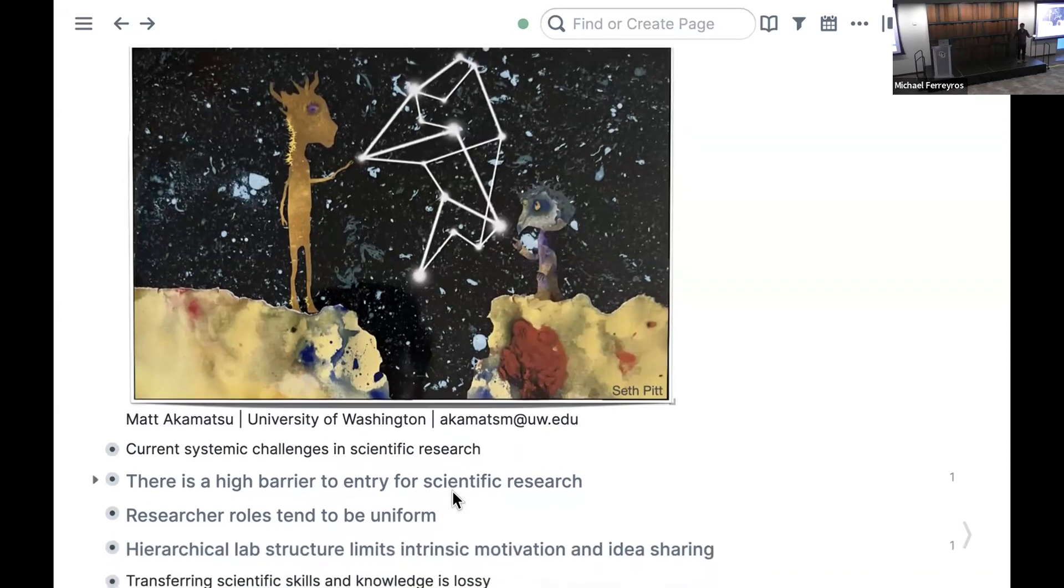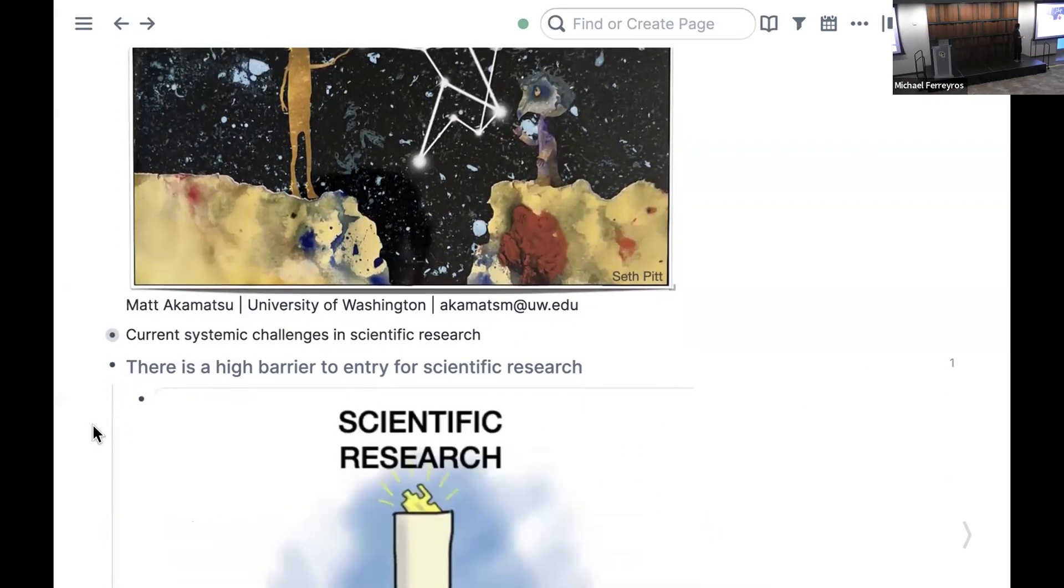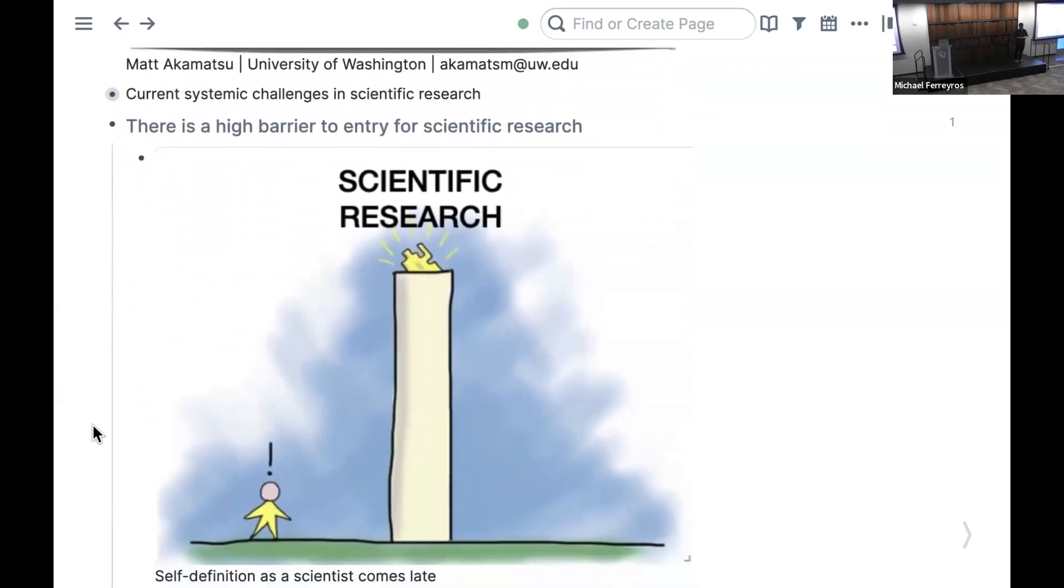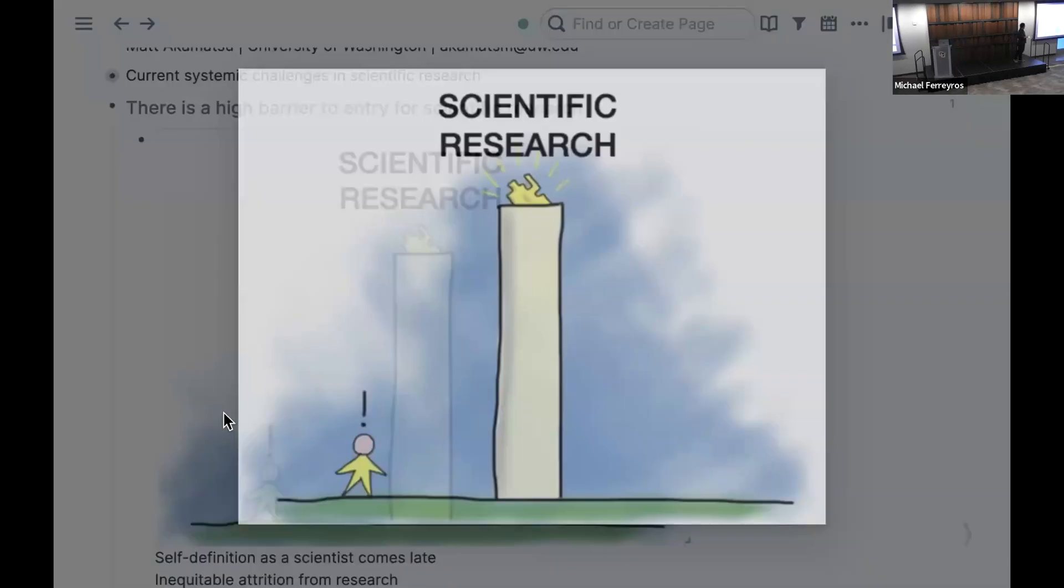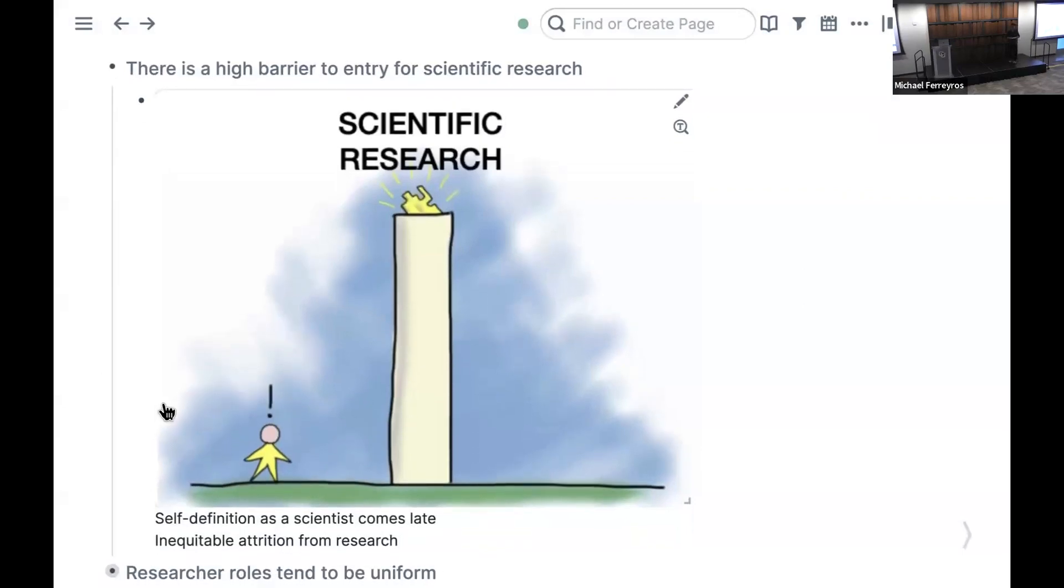I'd like to be one of the Trojan horses mentioned at the beginning of this session. This is motivated by many systemic challenges mentioned in the panel this morning, namely that there is a high barrier to entry for scientific research. One of the factors that allows a trainee to start calling themselves a scientist is when they make an original research contribution that other people can use. If you wait till you write a paper, that can be five or six years, and it's very demoralizing. That leads to really low mental health for trainees and inequitable attrition from the research ecosystem.